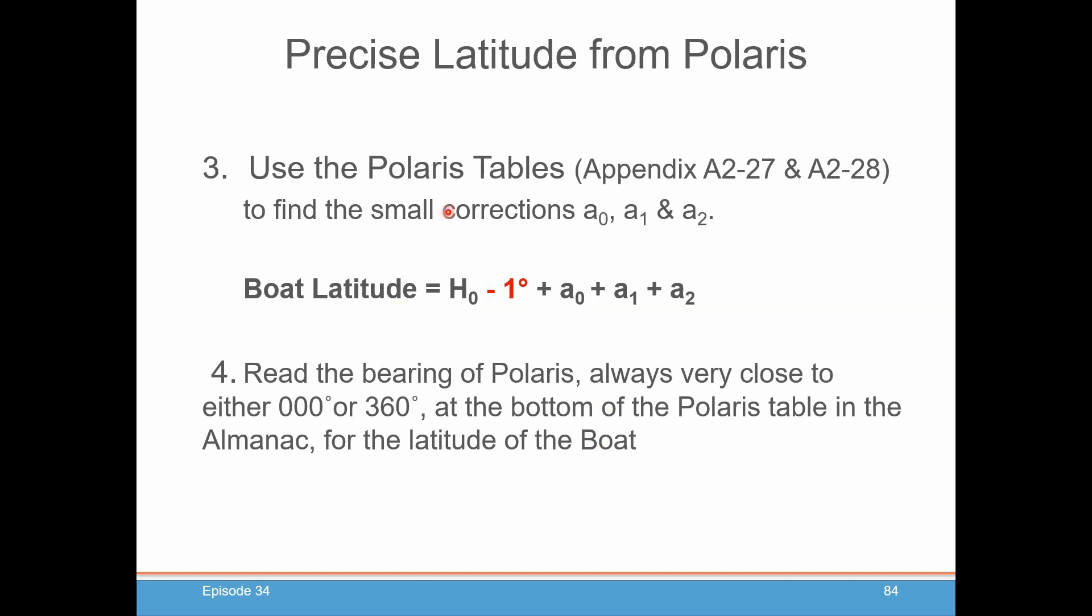Then you're going to go into the Polaris tables in the nautical almanac, and there's a copy of what they look like, an example at least, in the appendix of the exercise manual to find the small corrections called A0, A1, and A2. I'll show you what those look like in a second. And again, these change from year to year, so you actually have to use the table that's in the nautical almanac for the year that you're taking your site. The exercise manual is just an example from one particular year, probably 2013 or 2003.